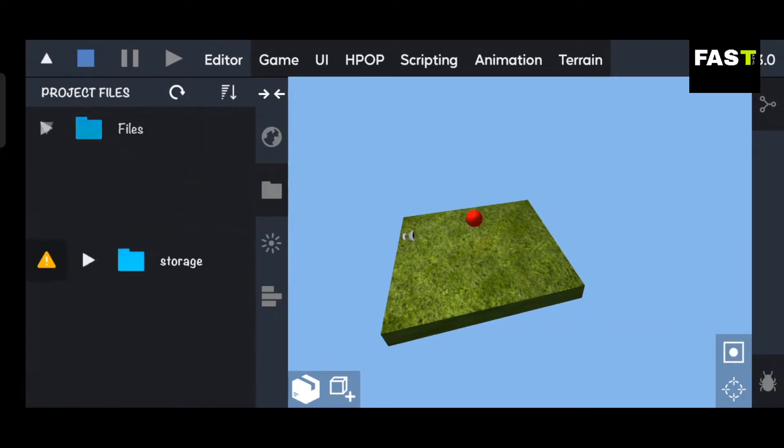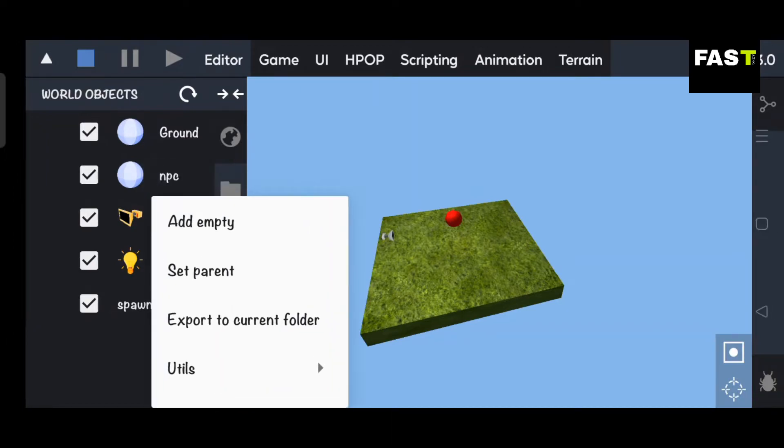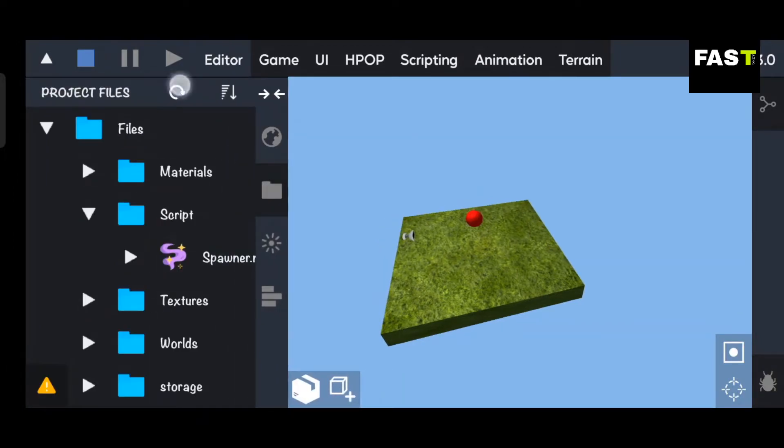Now let's save our object into a file, then we will spawn it. Select the folder where you want to save your object, then hold the object and click on Export to Current Folder. Your object will be successfully saved in the folder.